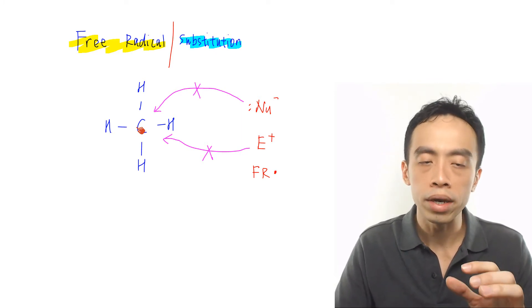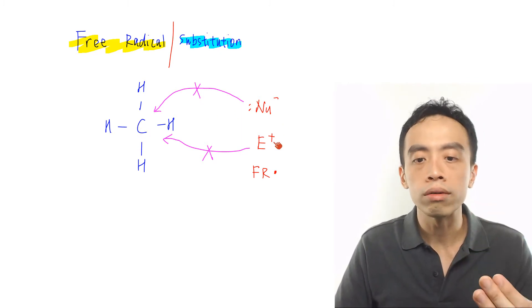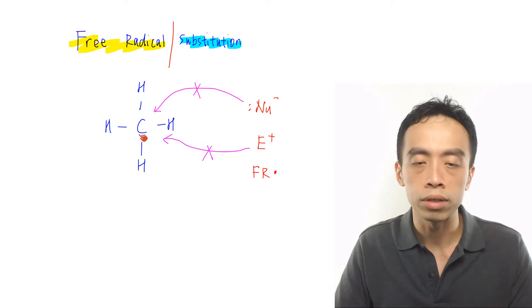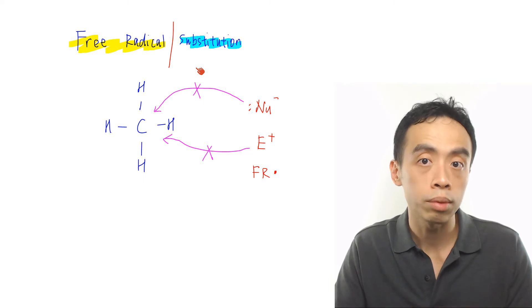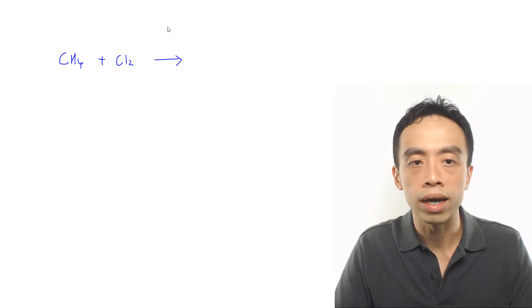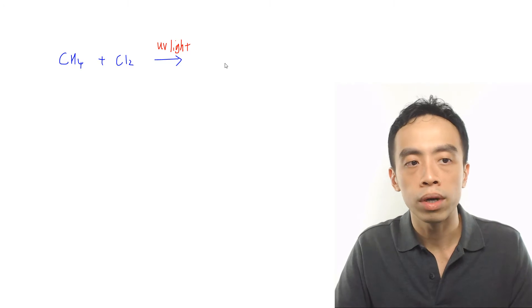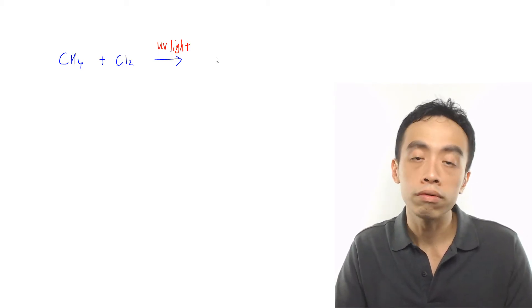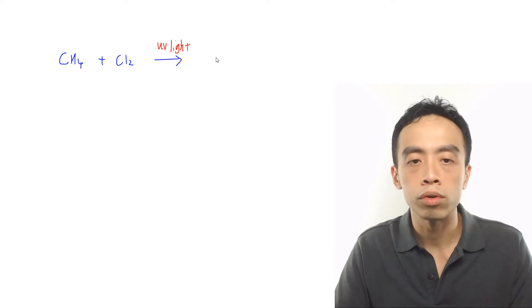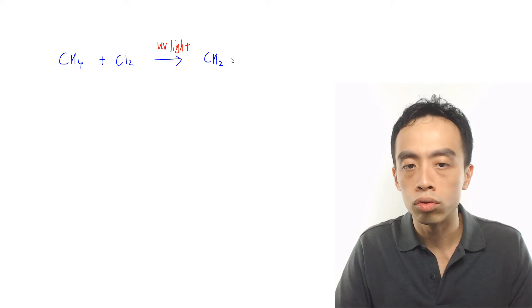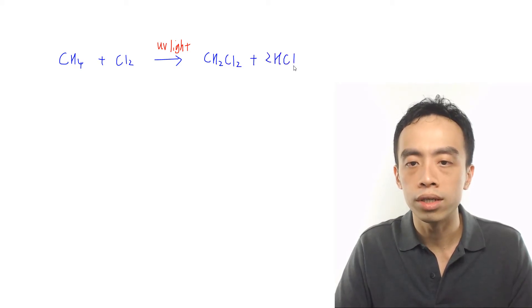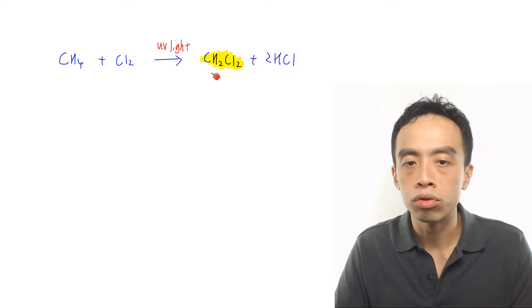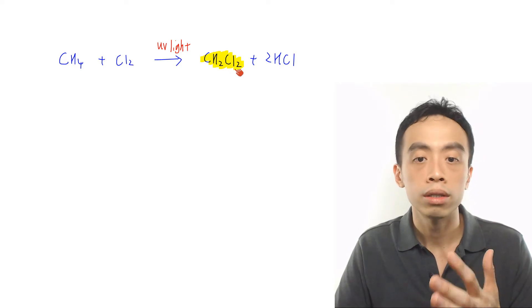Based on the charge of my carbon, I can deduce whether it reacts with a nucleophile, electrophile, or free radical. Based on the degree of saturation of my carbon, I can deduce whether it undergoes addition or substitution reaction. Now to describe the mechanism formally, let's write out a balanced equation: methane CH4 reacting with chlorine in the presence of UV light. What will happen is free radical substitution will give either a mono-substituted or di-substituted product or even higher. In this case, we will do di-substitution: CH2Cl2 plus 2HCl. So we want to describe the mechanism to show the di-substitution of methane to form dichloromethane.